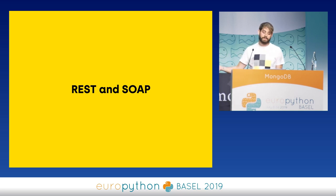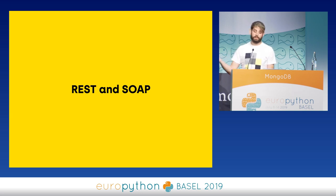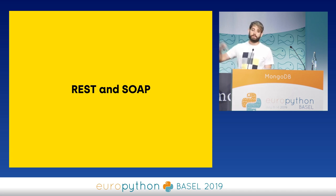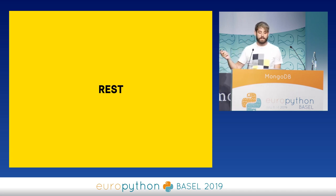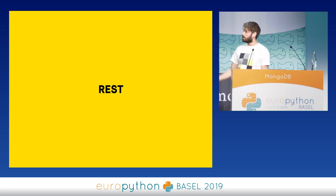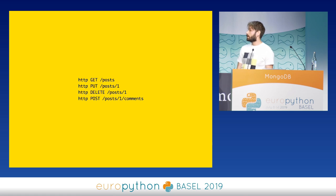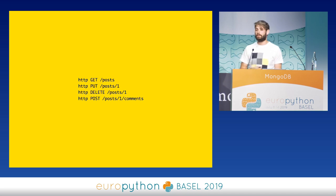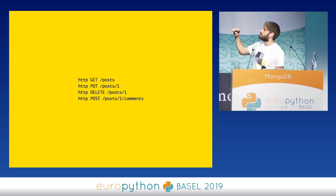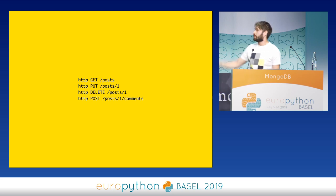We've also seen REST and SOAP, which are technologies used to allow different services to communicate together, and also used to have client applications communicate with a backend. REST became really popular — it's a beautiful concept where you use HTTP verbs for operations on your resources. For example, you can do a GET to get a list of posts, a POST to create a new post, DELETE, PATCH, and other non-standard ones.